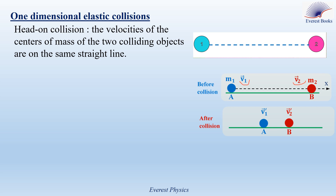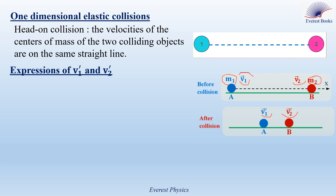After the collision, let V1' be the velocity of object A right after the collision, and V2' be the velocity of object B right after the collision. The question is to determine the expressions of V1' and V2' in terms of M1, the mass of object A, M2, the mass of object B, V1, the velocity of object A before the collision, and V2, the velocity of object B before the collision.